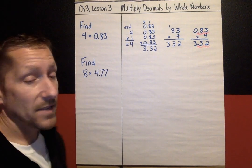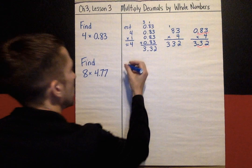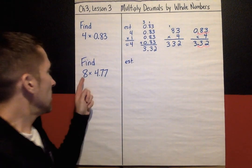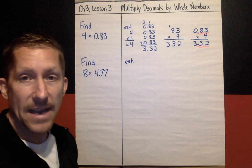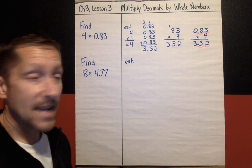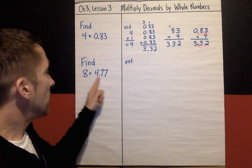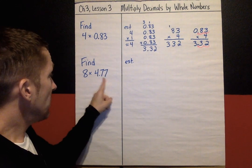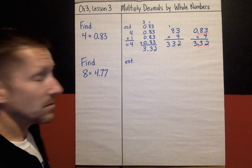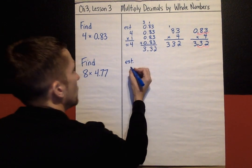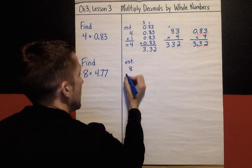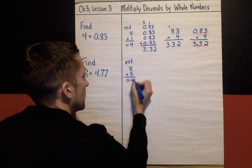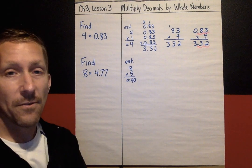Find the answer to 8 times 4.77, whole number times a decimal. Again, I want an estimate. This is close to 8, I'm going to leave it at 8. And 4.77, I would round that to 5. Again, thinking money, $4.77 is really close to $5. My quick estimate that I can do in my head would be 8 times 5. My estimate is my answer should be about 40.